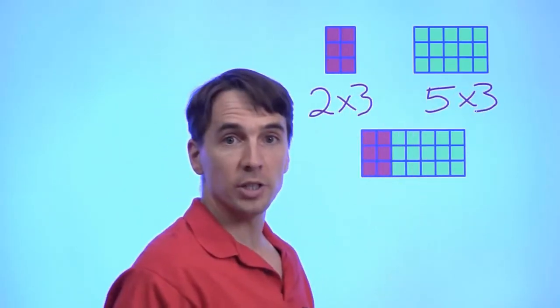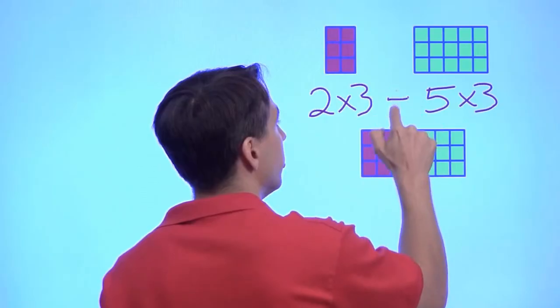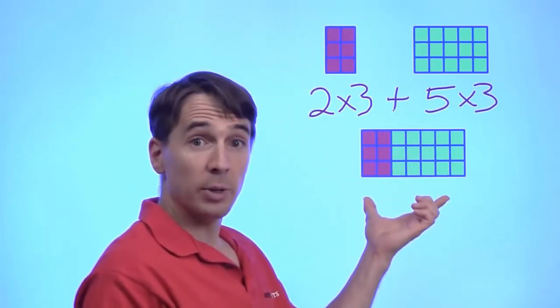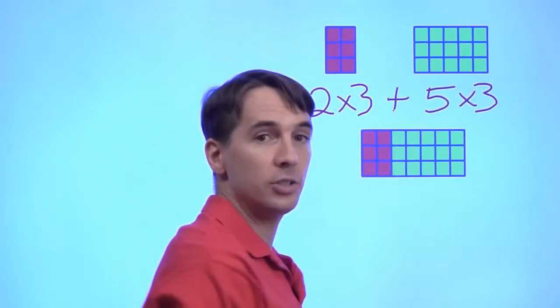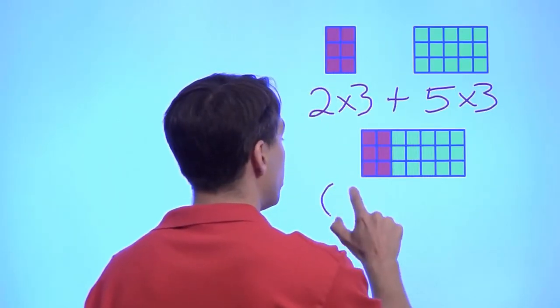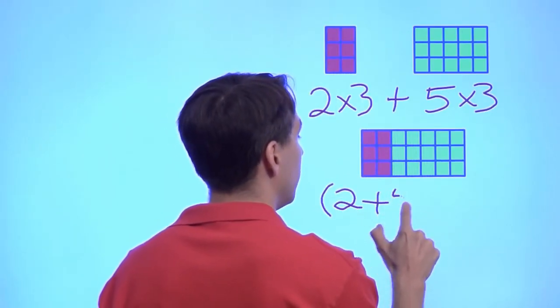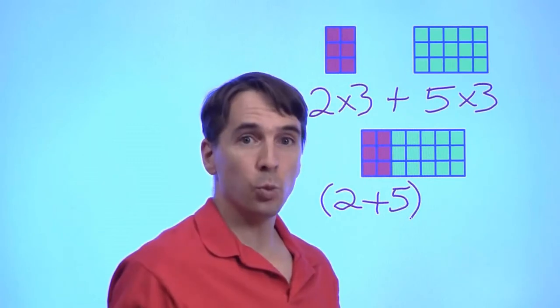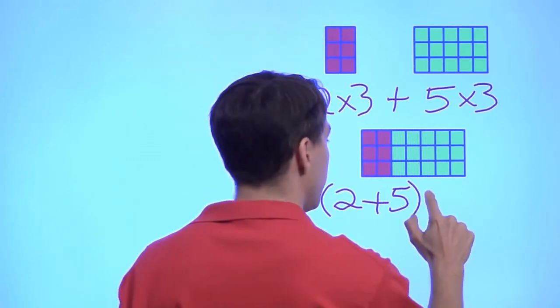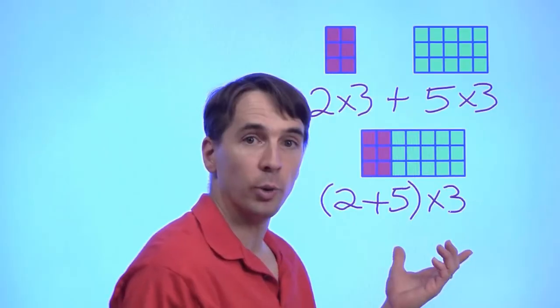So the total number of little squares up here, we just add these two. Now, coming down to the big rectangle, we know how many columns are here because we just pulled these two rectangles together. There's two plus five total columns there, and each one has three little squares. So that's two plus five, that whole thing, times three little squares.